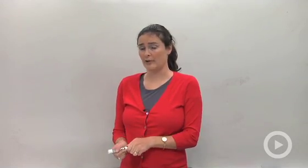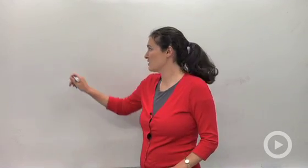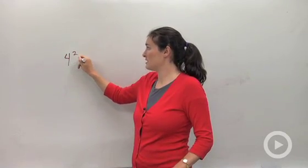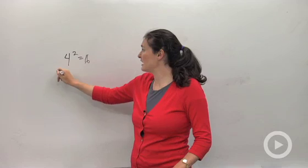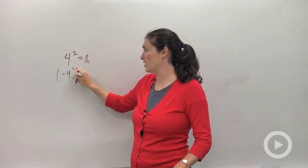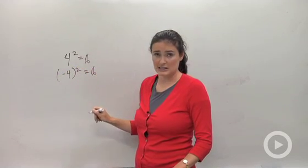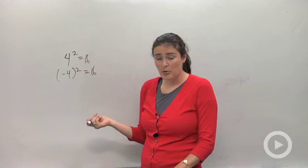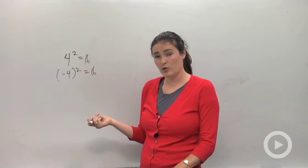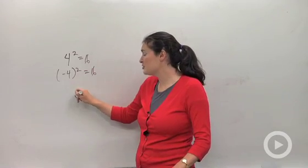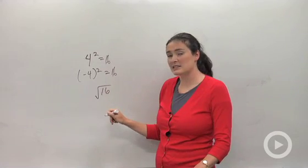Before we do that, let's talk about what you know about square roots. You guys know that 4 squared is equal to 16. It's kind of tricky because negative 4 squared is also equal to 16. So in our problems where we're solving by taking the square root of both sides, sometimes you're going to get something like the square root of 16.